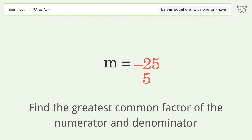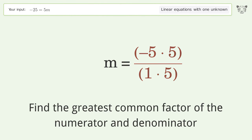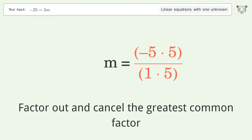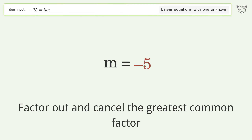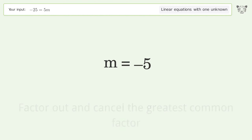Find the greatest common factor of the numerator and denominator. Factor out and cancel the greatest common factor. And so the final result is m equals negative 5.